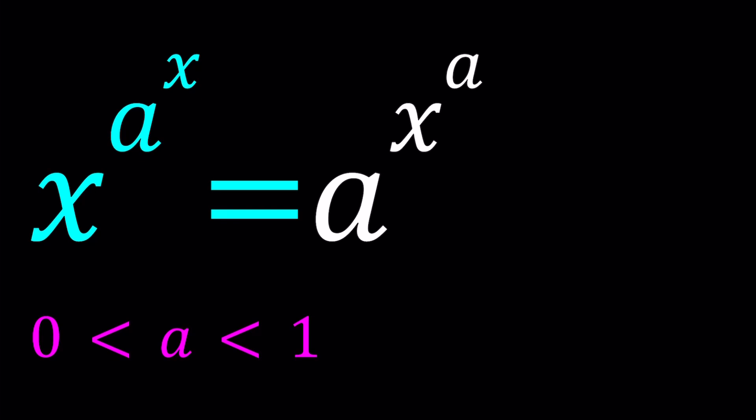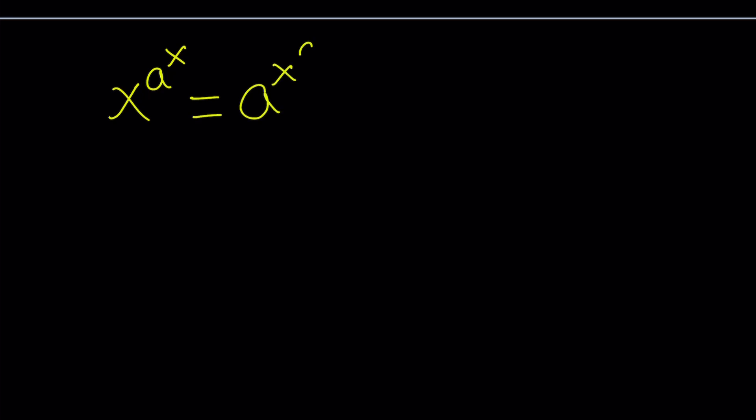Under those conditions, let's go ahead and log both sides with base a. We can definitely use any base, but using base a here seems to be a good way to do it. So, let's go ahead and rewrite our equation. We have x to the power a to the power x equals a to the power x to the power a. And again, a is between 0 and 1, and we're going to solve for x values.